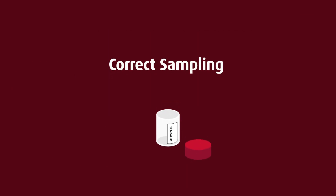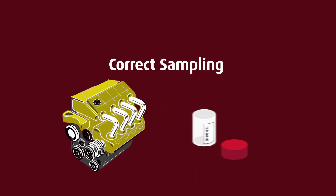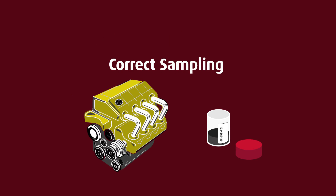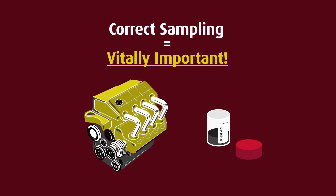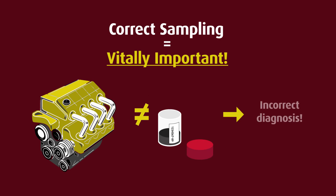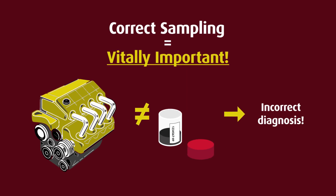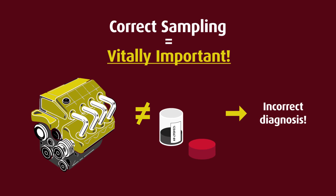The importance of correct sampling procedure: the taking of an oil sample is where the whole process starts. It is vitally important that the sample is taken correctly. If the oil sample is not representative of the oil that is in the machine, then the results will not reflect the true picture of what is going on inside the component. The end result will be an incorrect diagnosis based upon an inaccurate analysis because of a poorly taken sample.